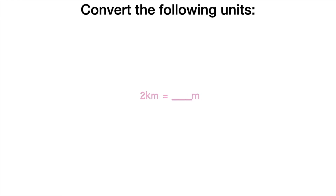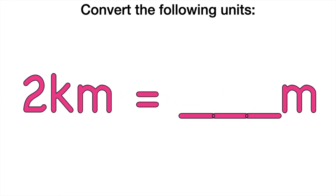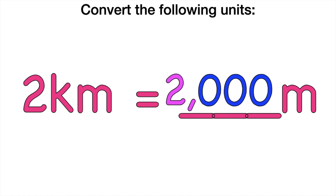How about this one? 2 kilometers is equal to how many meters? Always remember, children, in every 1 kilometer we have 1,000 meters. So if we have 2 kilometers, how many meters do we have? Good job — we have 2,000 meters.